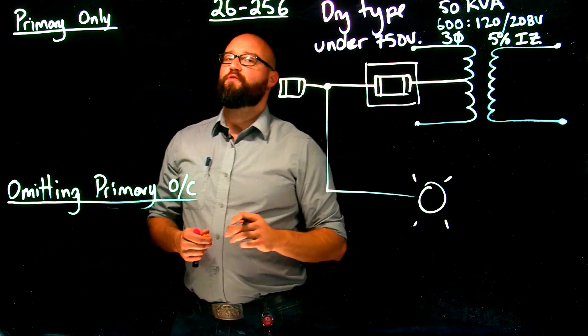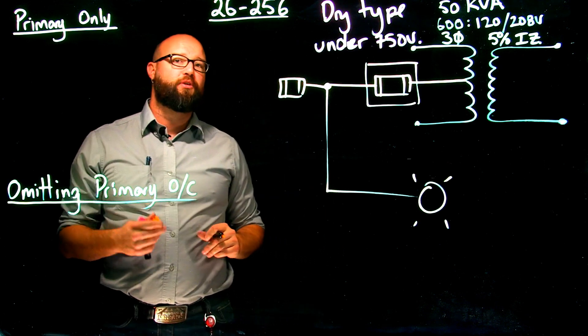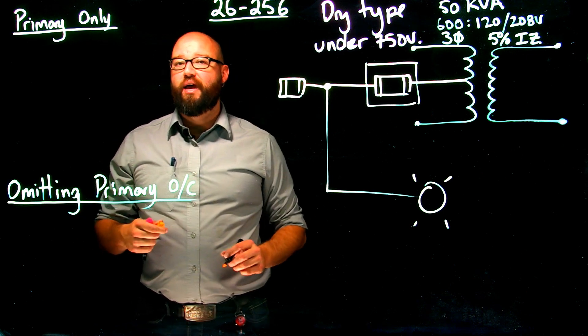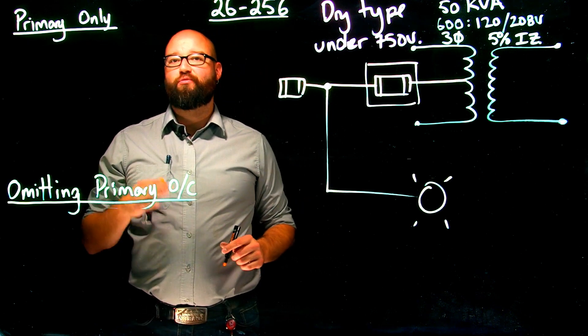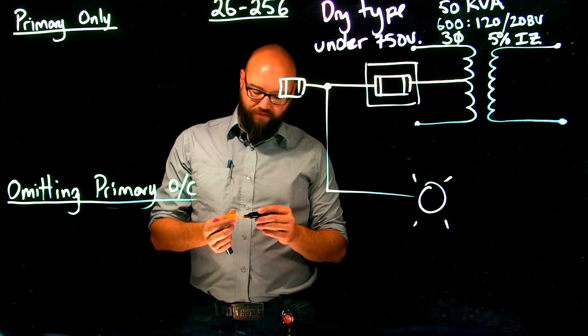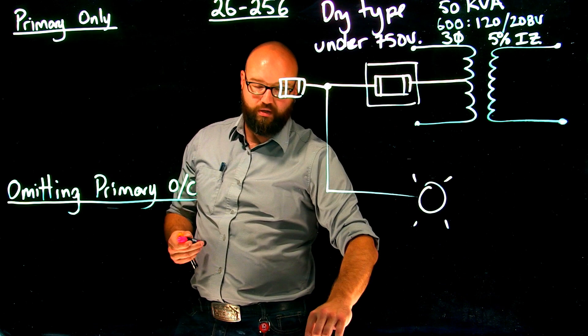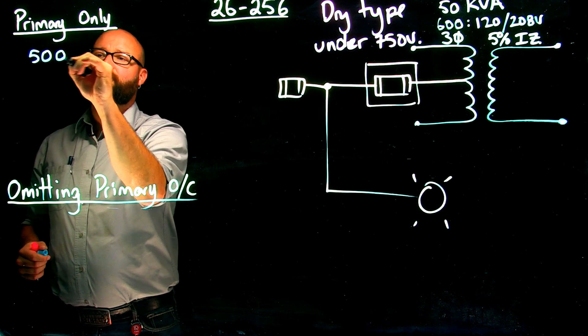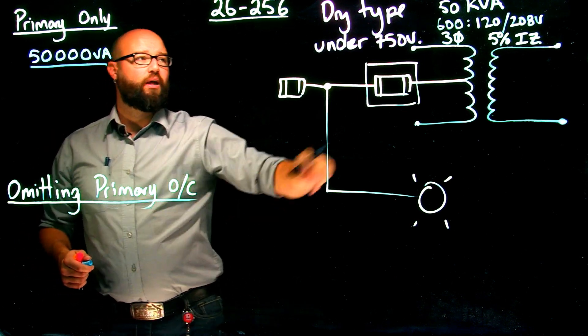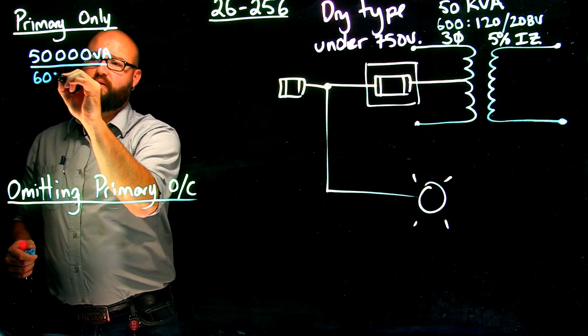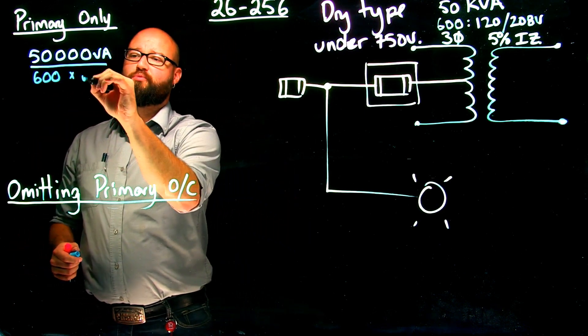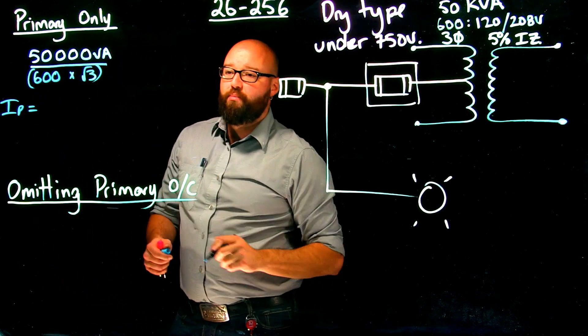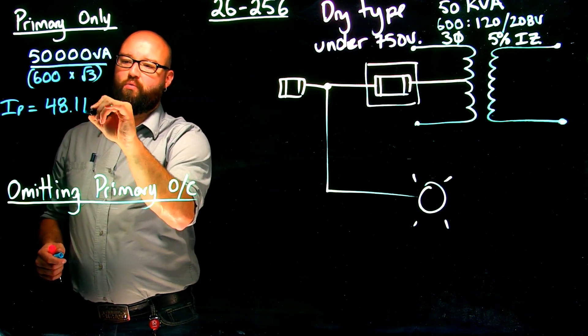This is just for individually sizing our overcurrent to our individual primary. So if we take a look, 26-256 subrule one tells us that if I have primary protection on a dry type under 750 volt transformer, it shall be set at not more than 125% of rated primary current. So first of all, obviously we need to figure out what is our rated primary current. We are going to take a look. We have our 50,000 VA or 50 kVA divided by my line voltage of 600 volts. And again, because it is a three-phase transformer, we're going to go times root three. We end up with an I primary or rated primary current of 48.1 amps.